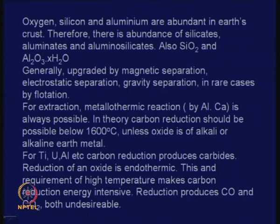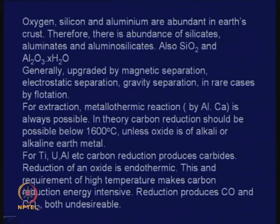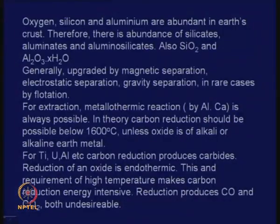Now you also know by now that oxides of aluminum and calcium are very, very stable. Therefore, many oxides that we separate out can in theory be reduced by aluminum or calcium at a suitably high temperature. If you remember the Ellingham diagrams, the free energy versus temperature plots, free energies of formation for aluminum and calcium were far below those for many other oxides. So in theory, we should be able to reduce many other oxides by using aluminum or calcium. But this is in theory, and it does not apply in all cases.